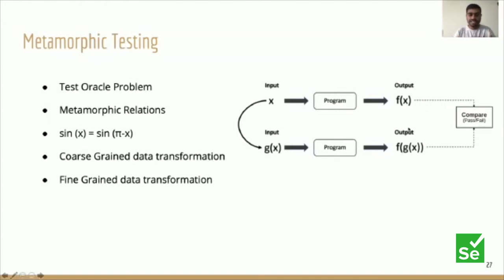A common real-world metamorphic testing example: if you are calculating the life expectancy of a person using an ML model, you consider weight, height, diseases, smoking habits, and physical fitness. A metamorphic relation here is: if a user has a smoking habit, the model should reduce predicted lifespan by some percentage. These types of relations — where changing one input property should produce a predictable change in output — form the basis of metamorphic testing.